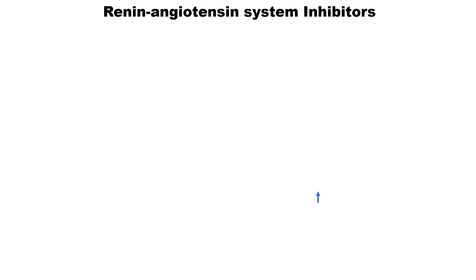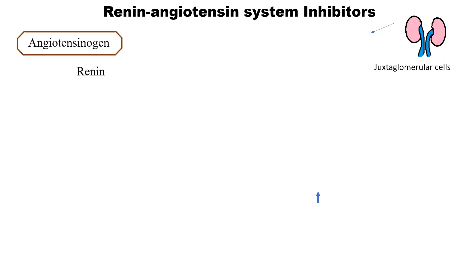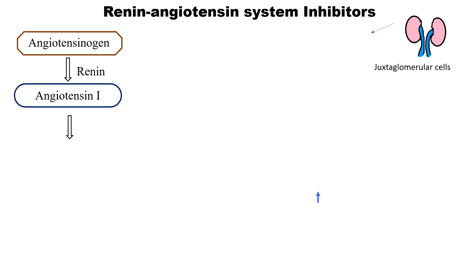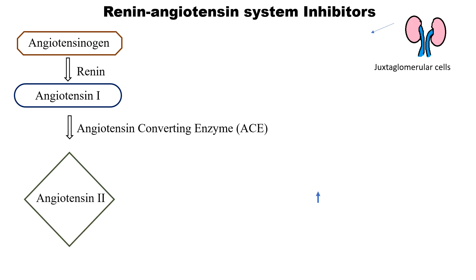Whenever blood pressure decreases, the flow of blood towards the kidney is reduced. At that time, specialized cells within the kidney called juxtaglomerular cells release a hormone called renin. This renin is transported to the blood where it converts angiotensinogen into angiotensin 1. Angiotensinogen is a protein synthesized in the liver and circulated in the blood. Later, angiotensin-converting enzyme (ACE) converts angiotensin 1 into angiotensin 2.